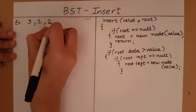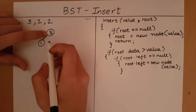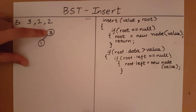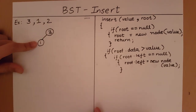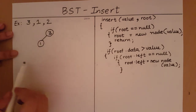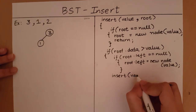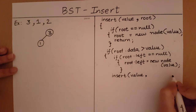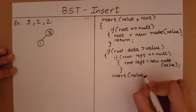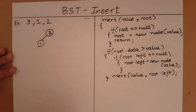Now suppose I want to input 2. I check whether 2 is less than 3 — yes. So I want to input 2 somewhere to the left of 3. I check if the space to the left of 3 is free — no, it has already been occupied by 1. In such a case, I perform the insert operation on the left subtree of 3 by calling insert again with the same value and root.left as the new root.